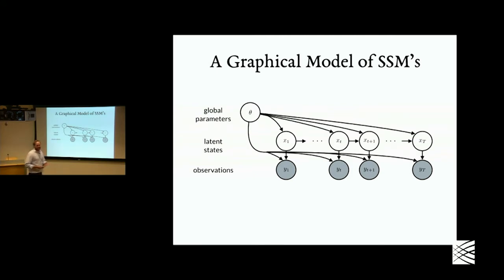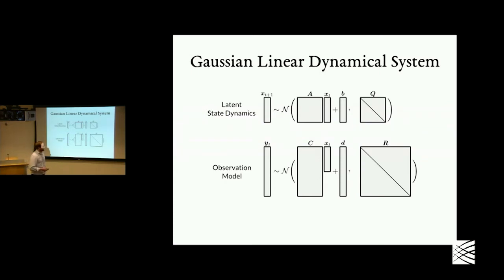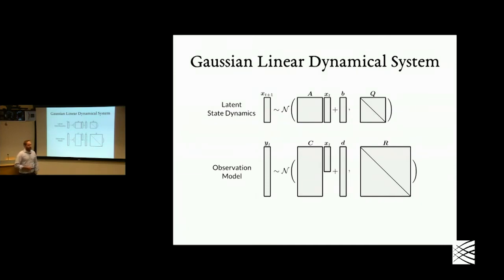For linear Gaussian dependencies, we can view these systems in terms of block diagrams. The latent state at time t+1 is a Gaussian random variable whose mean is a linear function of x at time t — with dynamics matrix A, bias vector B, and covariance matrix Q. Observations are likewise a linear function of the latent state via emission matrix C, bias D, and covariance matrix R. This representation works for linear Gaussian systems, which are perhaps the canonical type of state-space model.